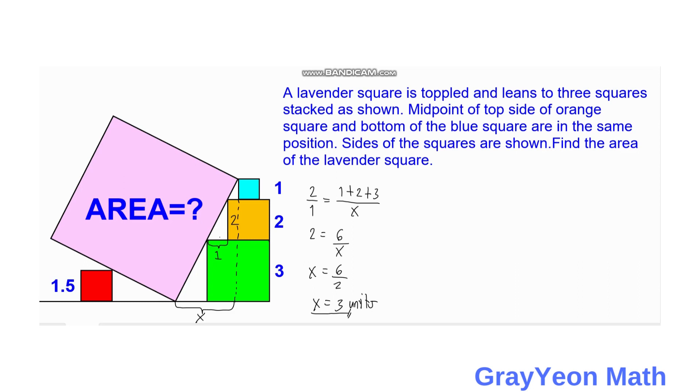Okay, so notice that the height of these 3 squares, their total, and this distance x, and this side of the lavender square forms a right triangle, and we are required to find the side of the lavender square.